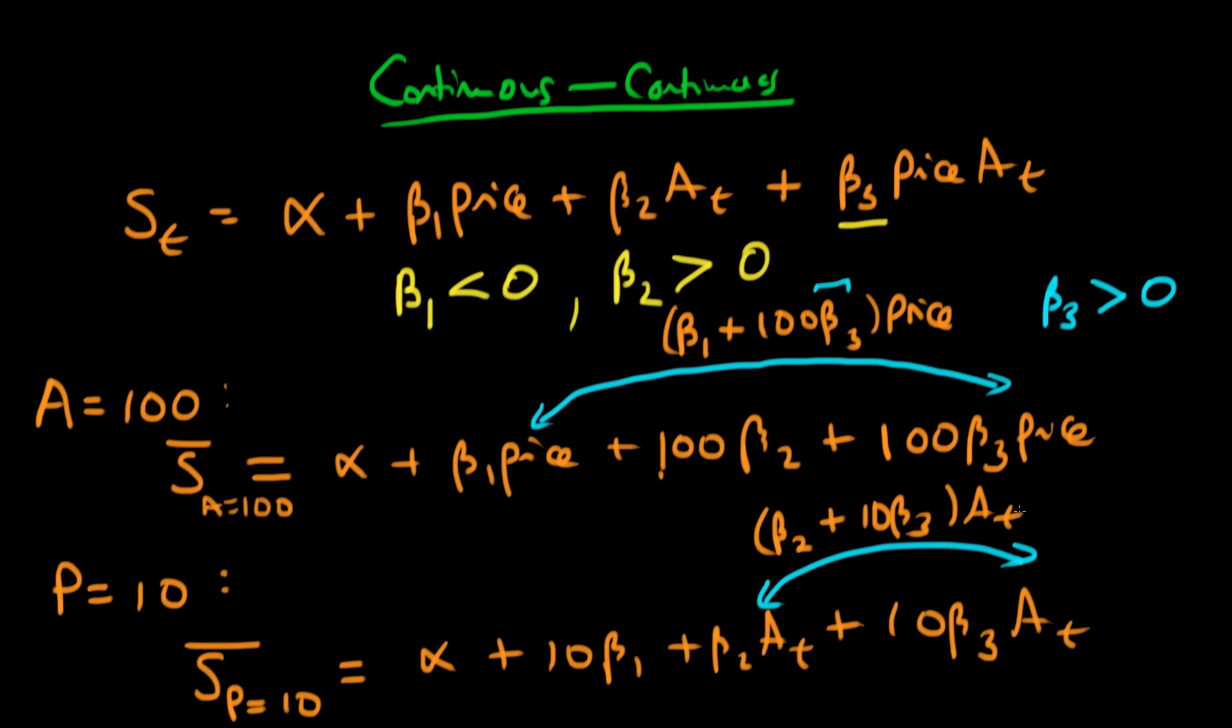So what does beta 3 represent in this case? Well, remember that we found from the first example that beta 3 by theory should be greater than zero. Well, what does it say in this case? Well, it says if your price is higher, so remember the price is represented by this 10 here, then the effect of advertising tends to be greater.